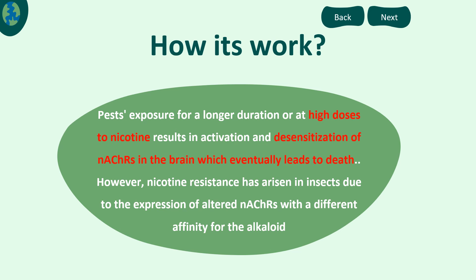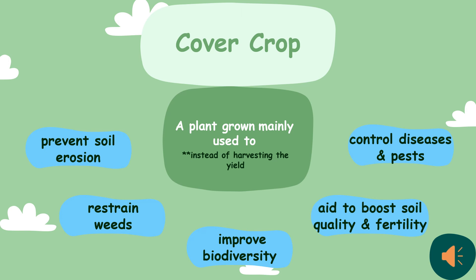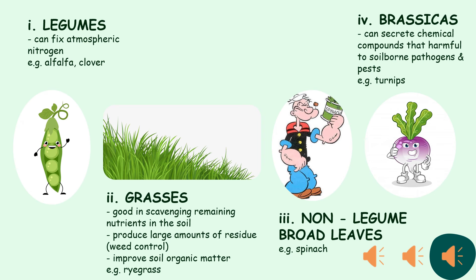Pest insects and weeds can cause a great loss to farmers. Here are several common planting techniques used to control pests, which include cover crop, mulching, transplanting, and intercropping. The first technique is planting cover crops. It is a type of plant grown mainly to prevent soil erosion, restrain weed growth, improve biodiversity, boost soil quality and fertility, and control disease and pests. Four common types of cover crops are legumes, grasses, non-legume broadleaf, and brassicas.